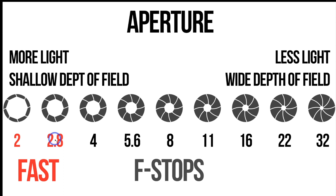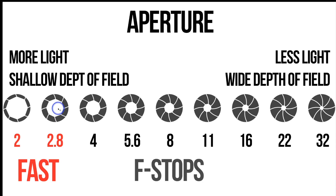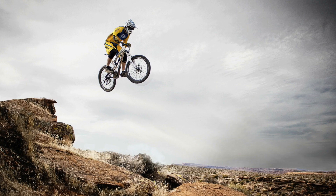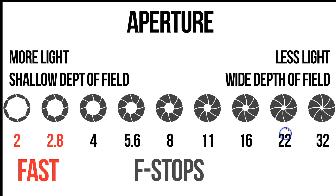Aperture controls two different options. One is light — larger opening means more light, smaller opening means less light. They also control what we call depth of field, meaning what is in focus. Imagine you focused on a specific point, and consider how much in front of and behind that point is also in focus. If we had a shallow depth of field, maybe only a small range is in focus. If we had a wide depth of field, a much larger range is in focus. For a portrait where the background is completely blurred, you want a low aperture number. For a landscape where everything should be in focus, you want a higher aperture number.